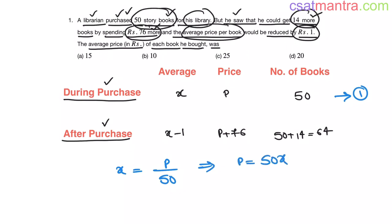Now, I am writing the equation for case 2. So, average is X minus 1. Price P plus 76. Number of books, 64. So, P plus 76 is equal 64 into X minus 1.